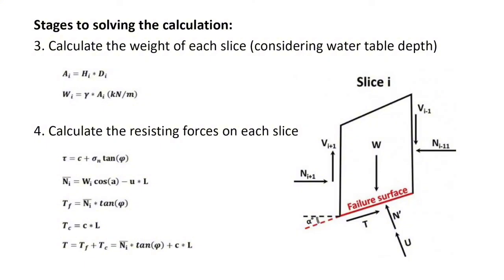The weight of each slice is calculated using the density and area of the slice. Next we calculate the resisting forces on each slice. The calculation uses the Mohr-Coulomb failure criterion to calculate the shear resistance of each slice. This equation uses cohesion, normal force n, and friction angle. The normal force n is then calculated for each slice considering the weight, angle, pore water pressure, and arc length of the slice base. The corresponding friction force is calculated using the effective normal stress and the friction angle. The cohesion resistance force is calculated using the cohesion and slice length. The overall resistance is calculated as the sum of the friction and the cohesion resistance.